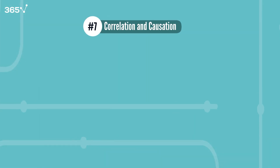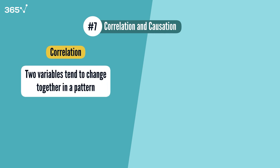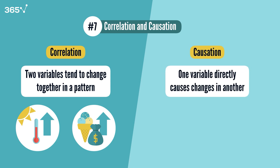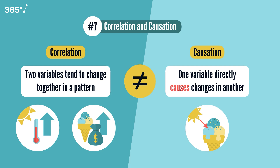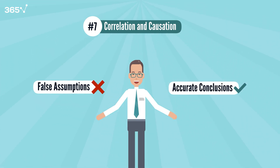Concept 7: Correlation and Causation. These refer to understanding the relationship between variables and whether one causes changes in another. Correlation is when two variables tend to change together in a pattern — for example, as temperatures rise, ice cream sales also rise. They move together, but one isn't necessarily causing the other. Causation is when one variable directly causes changes in another — for example, leaving ice cream in the sun (the cause) makes it melt (the effect). Just because two variables are correlated doesn't mean one causes the other — ice cream sales and swimming pool visits might be correlated due to hot weather, but neither causes the other. Understanding this distinction helps analysts avoid false assumptions.